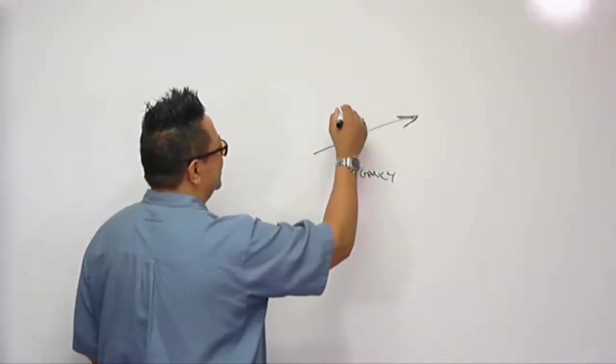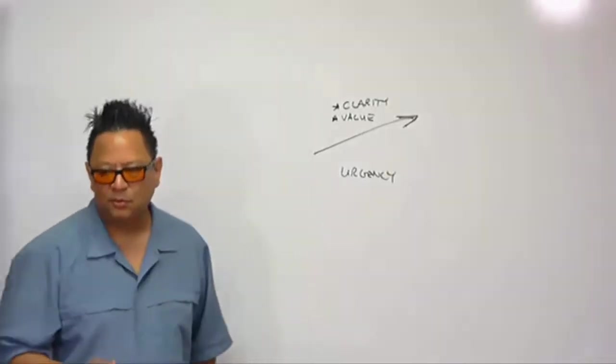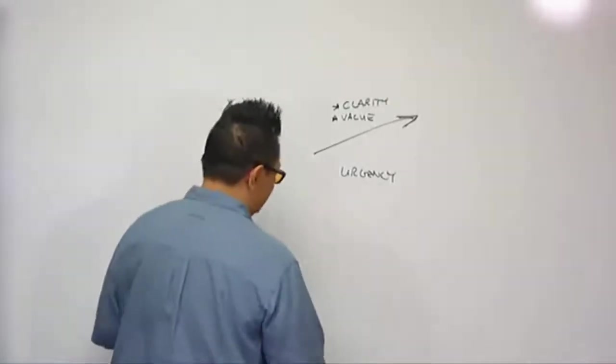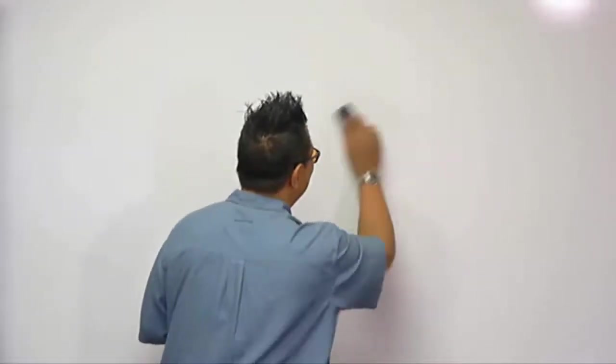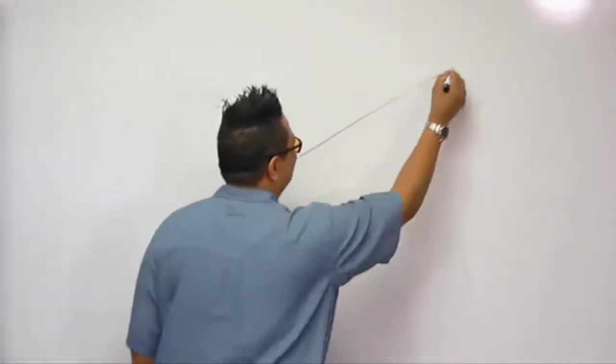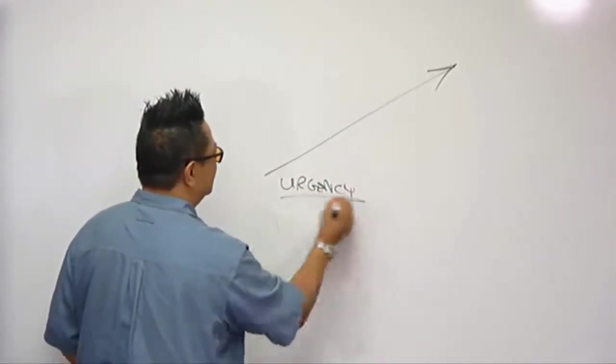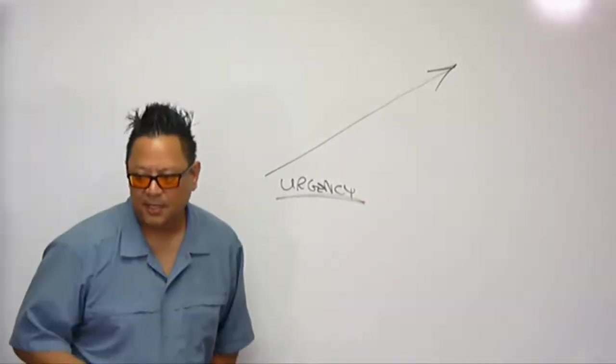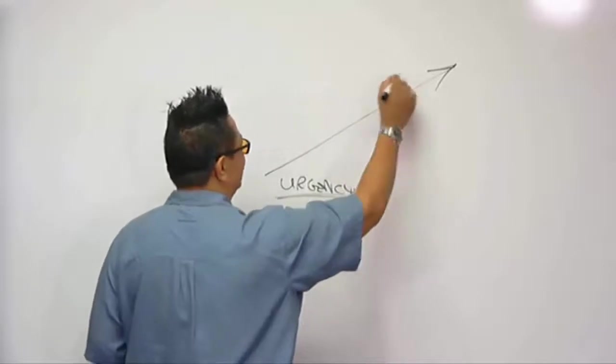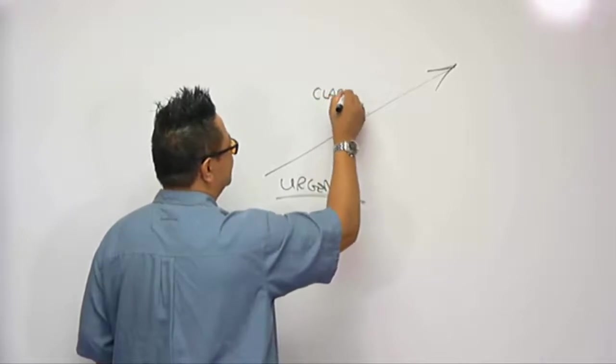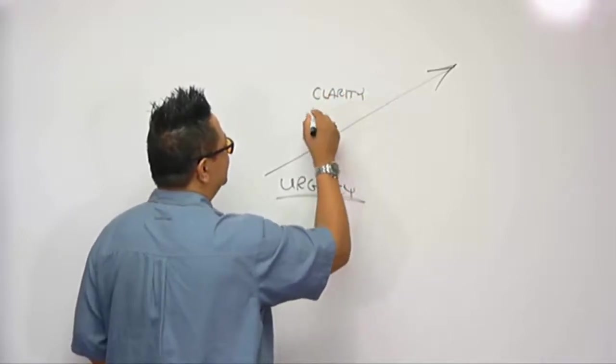Number one, you provide clarity as to the process, right? Clarity and then value. So clarity and value will help increase, make it bigger. So this is your urgency arrow. This is urgency for your client. And so the two things that increase urgency is you've got to increase clarity and increase value.